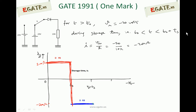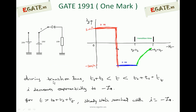The magnitude of current during storage time can be calculated as V_r divided by R. V_r is the reverse voltage of minus 20 volts divided by R of 10 kΩ, so the value of this current is minus 2 mA, shown in blue. This is minus 2 mA till T0 plus TS — that is, until storage time completes. After this, the diode tries to come towards steady state under reverse bias. During transition time — from T0 plus TS to T0 plus TS plus TT — the diode current reduces exponentially towards I0. The value at the end of transition time is minus I0. For T greater than T0 plus TS plus TT, steady state is reached with current as minus I0.